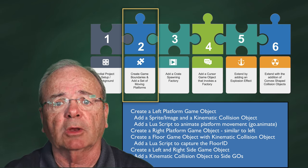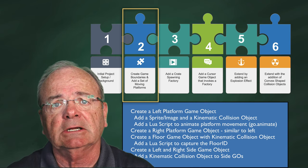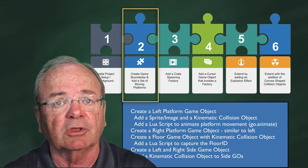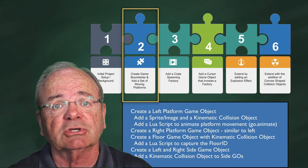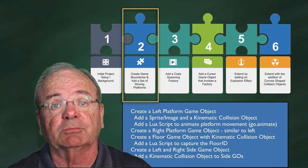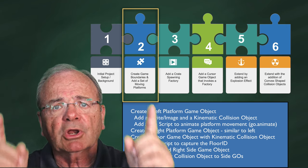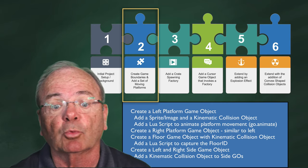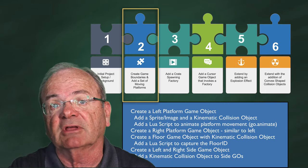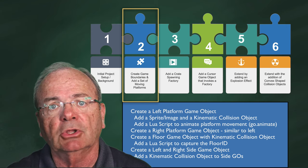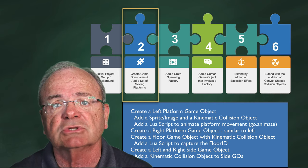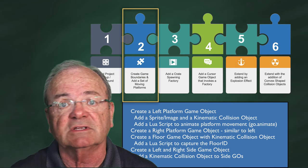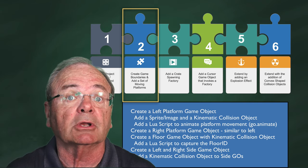Here in Phase 2, we're going to create the moving set of platforms and the boundaries. The two platform game objects — one for left, one for right — will each have a sprite with an image, a kinematic collision object, and a Lua script. The left and right boundaries will consist solely of a kinematic collision object to keep game objects bouncing back into the game world. The floor will have a kinematic collision object and a Lua script, mostly to capture the floor ID so we know when crates hit it and can spawn an explosion.